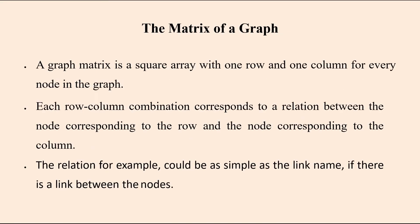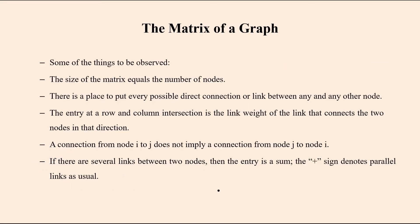How can we build the matrix of a graph? Normally a graph matrix is a square array with one row and one column for every node in the graph. So it may be a 2×2, 4×4, or N×N matrix. Each row-column combination corresponds to a relation between the node corresponding to the row and the node corresponding to the column. For example, it could be as simple as the link name — if there is a link between two nodes, we can enter the name of that link.